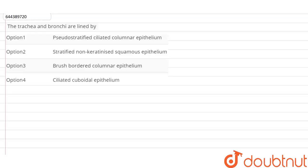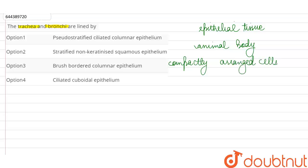So we know that epithelium or the epithelial tissue is a very important tissue that we're going to find in the animal body because it is made up of compactly arranged cells having little intercellular matrix. And that is why these epithelial tissues are able to form a covering for our organs.